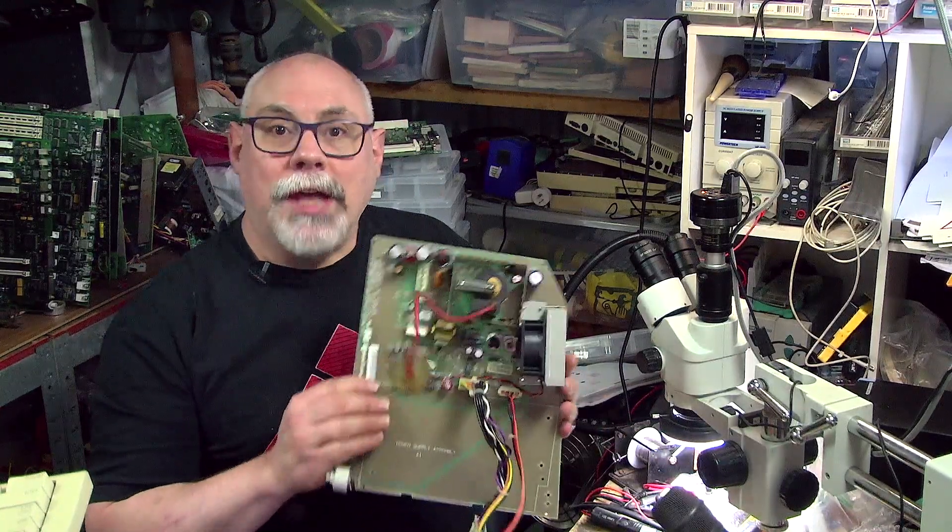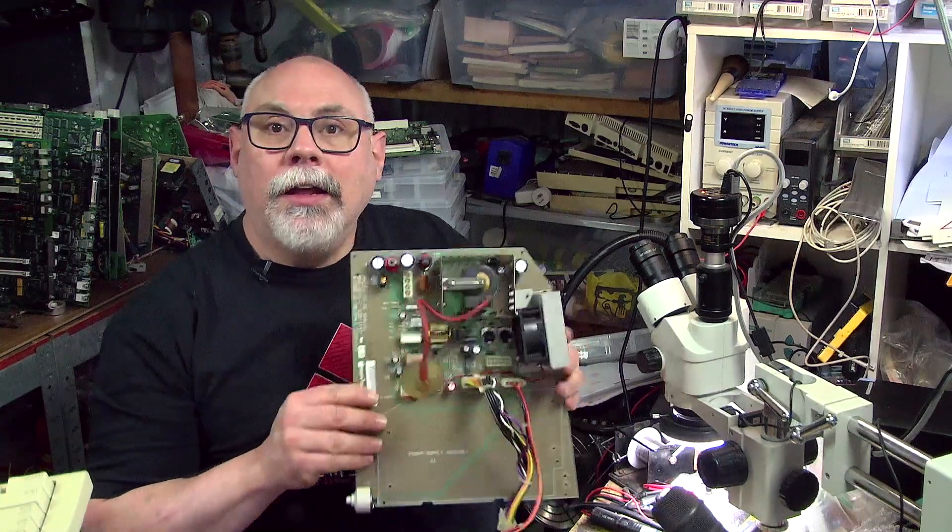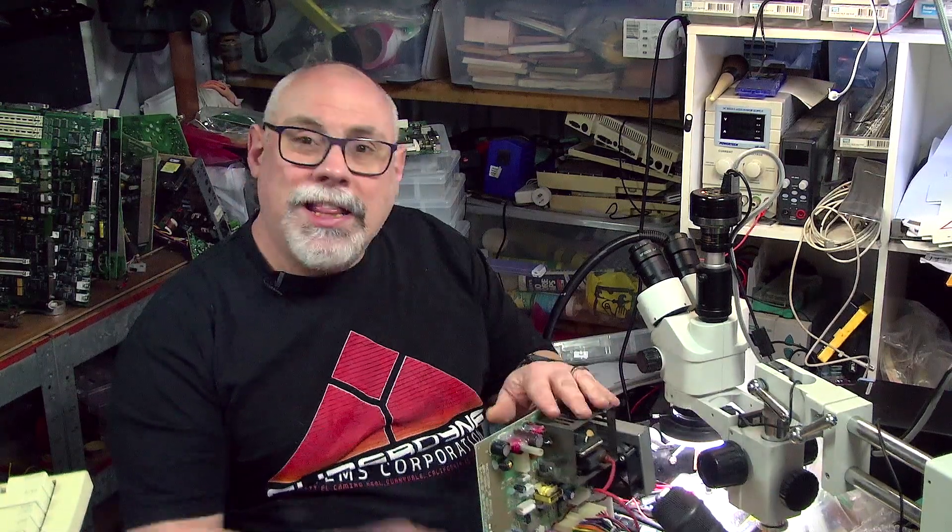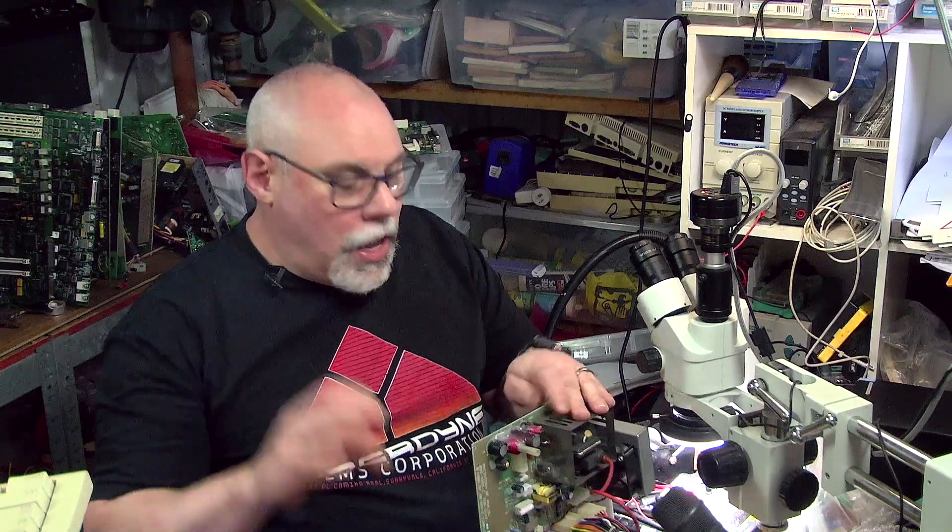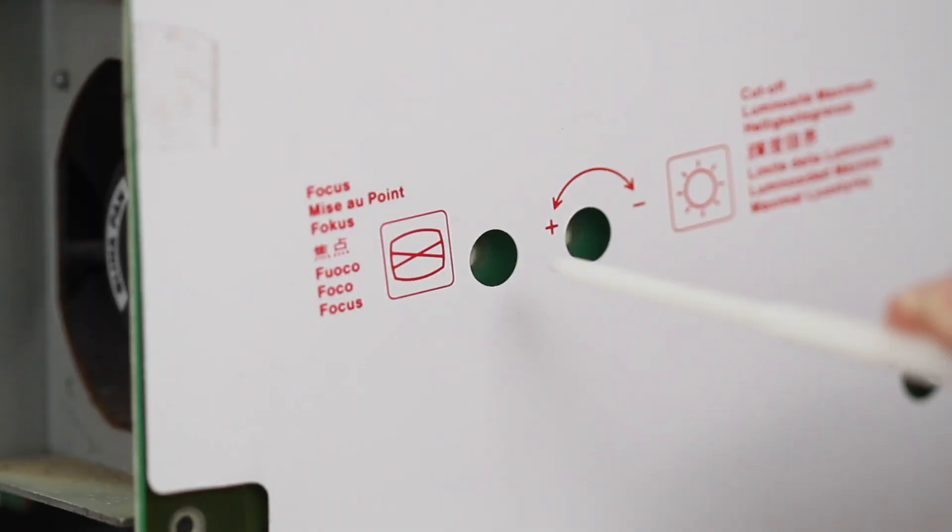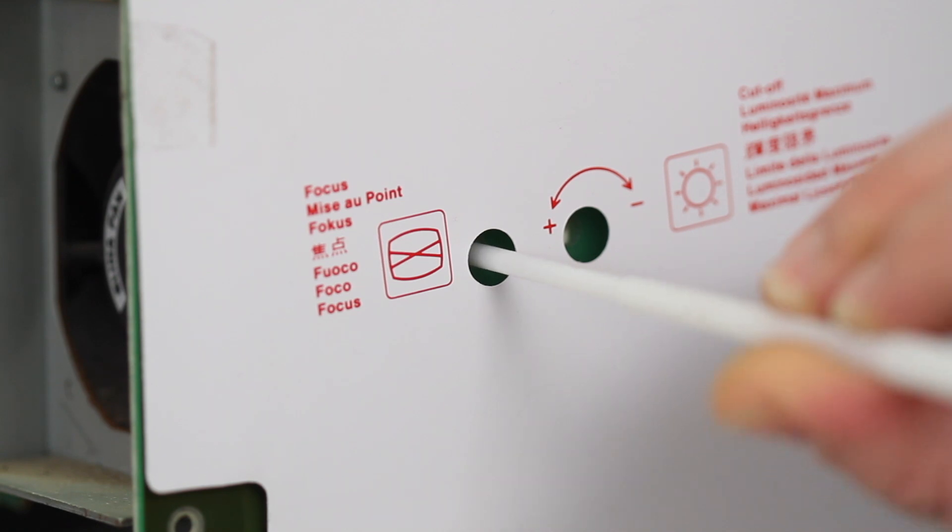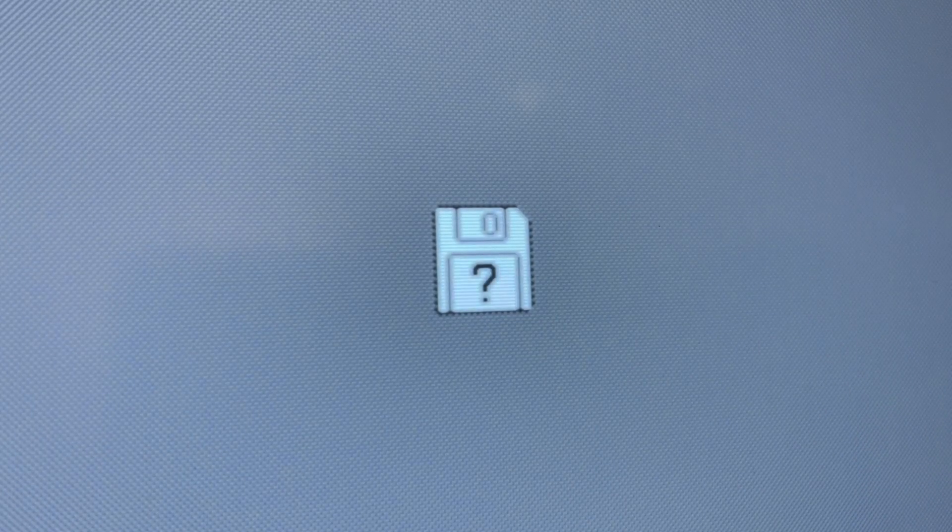Now I've got the Macintosh SE30 analog board right here, and the problem is you've got a screen that's a little bit out of focus and you've got the focus adjustment on the side. You try and turn that focus adjustment and it makes no difference at all. No matter which way you turn it, the screen remains out of focus.